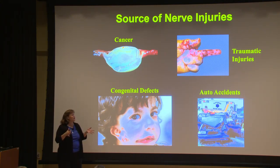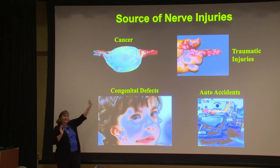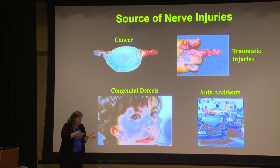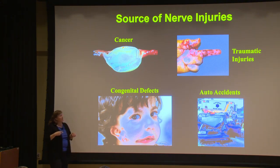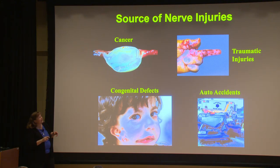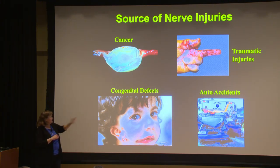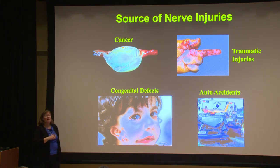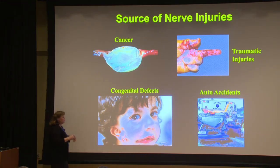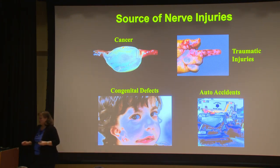I work on both peripheral nerve tissue — the nerves in your hands, fingers, legs, and face — as well as spinal cord tissue. These are some of the sources for nerve injury: there are nerve injuries caused by cancer, where a tumor must be removed from the nerve or a surgeon must cut a nerve while removing a tumor elsewhere. Prostate cancer is a common example where the cavernous nerve is often cut during prostate tumor removal. Traumatic injuries are probably the biggest source — this is an example of a table saw injury. There are also congenital defects requiring facial reconstruction and nerve rerouting, plus automobile accidents.